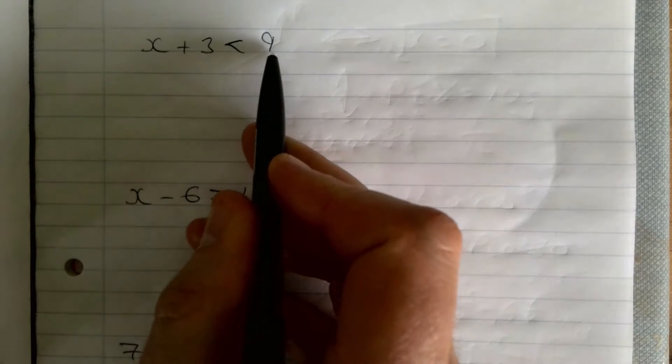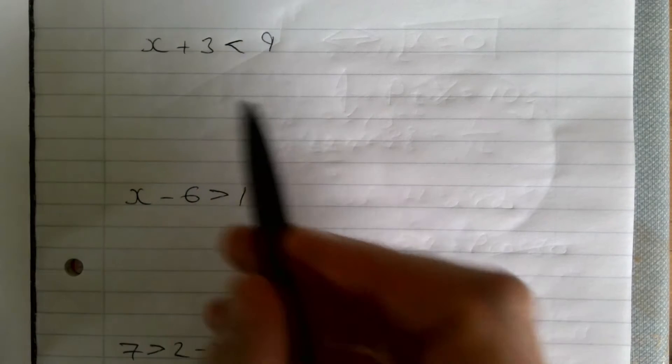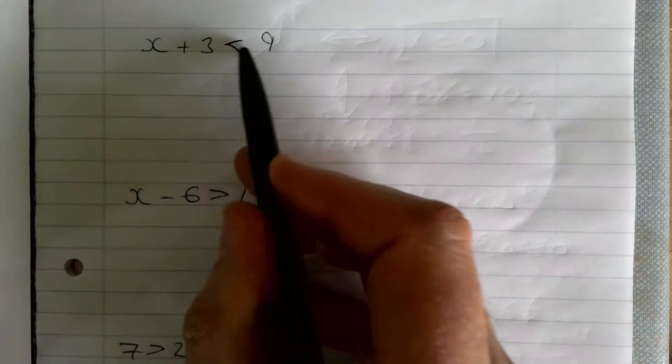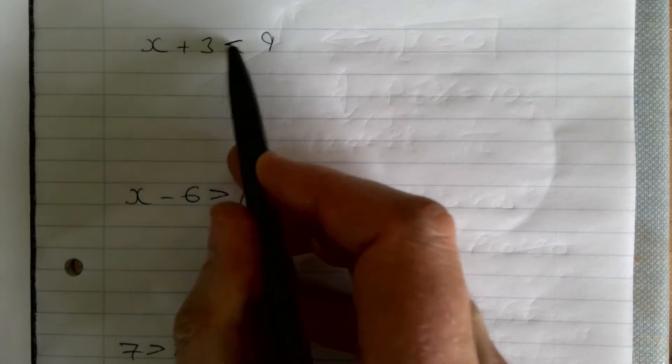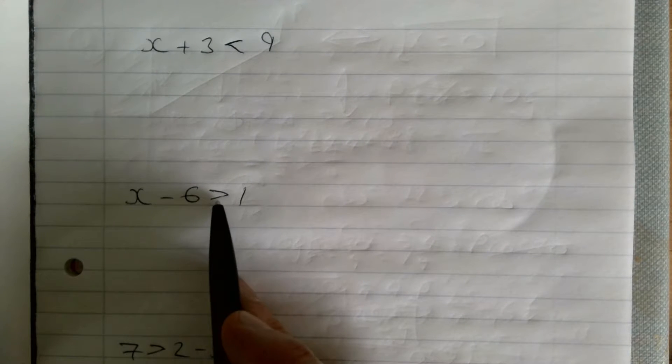I just want to spend a bit of time talking about some simple inequalities. First one is x plus 3 is less than 9. We need to be aware of these signs - it's less than, as in x plus 3 is smaller than 9. This next one, x minus 6 is greater than 1. You need to be aware of those and which way around they appear.